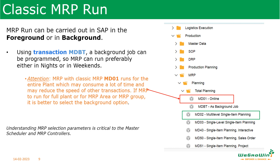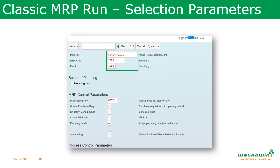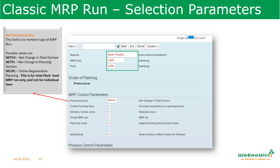Understanding the MRP selection parameters is very important and critical for the master scheduler and MRP controller. For a classic MRP run, selection parameters include material, MRP area, and plant for a single material run. It starts with the net processing key — this specifies what type of MRP run has to happen. For example, NETCH means net change within the total horizon, NETPL means net change within the planning horizon, and NEUPL means it is a regenerative MRP run for the entire plant.